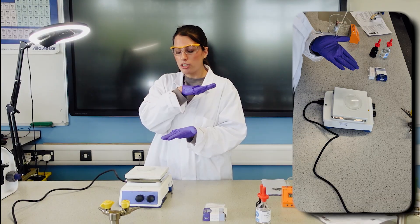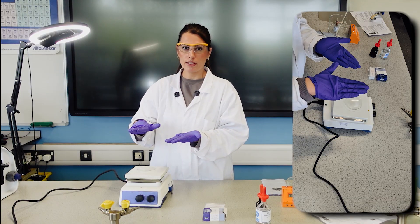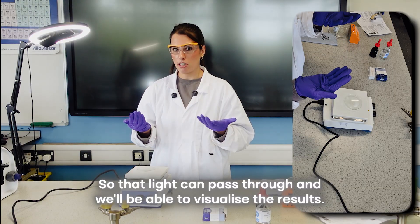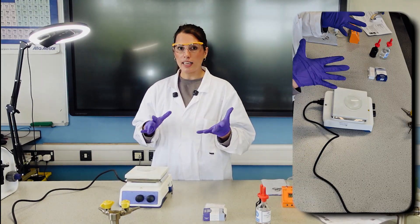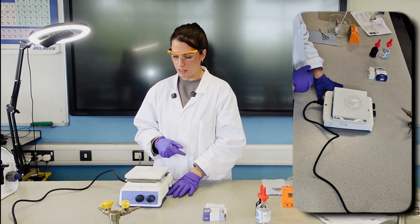All of this is to help break down the cells that are connected. So when we come to squash it, we get a single layer of cells so light can pass through and we'll be able to visualize the results. Acid also stops mitosis as we talked about earlier.